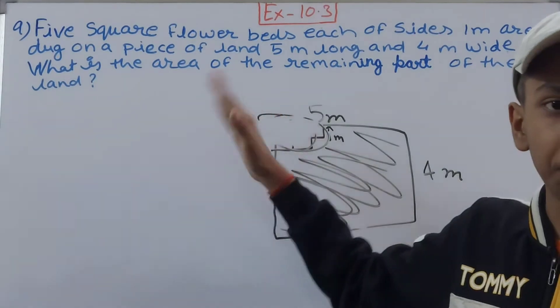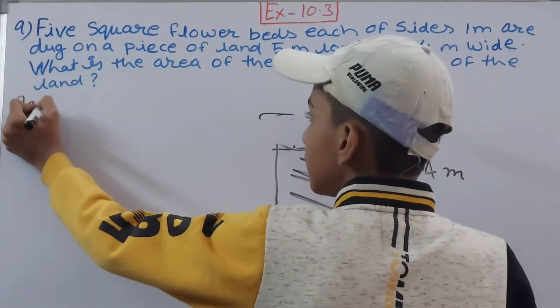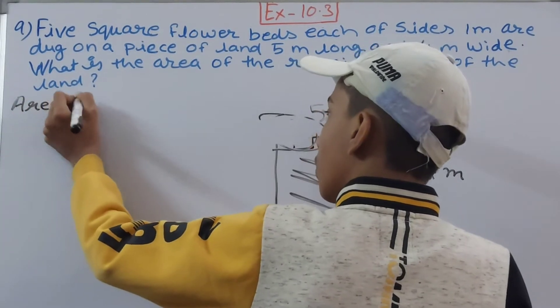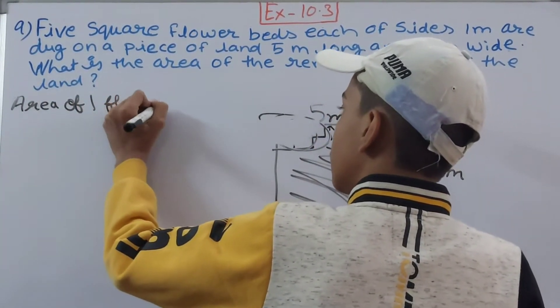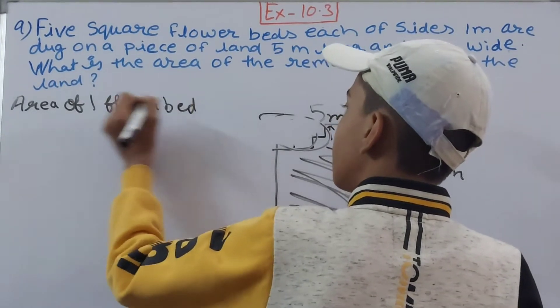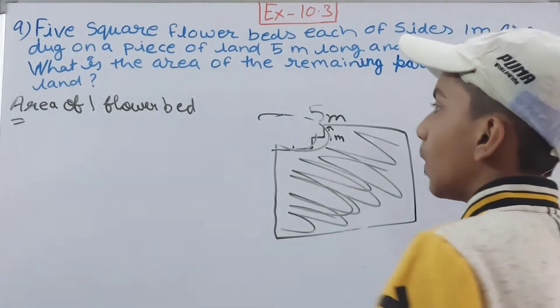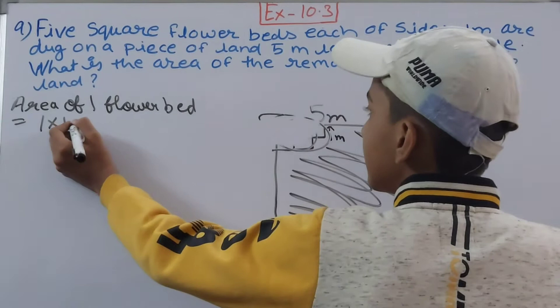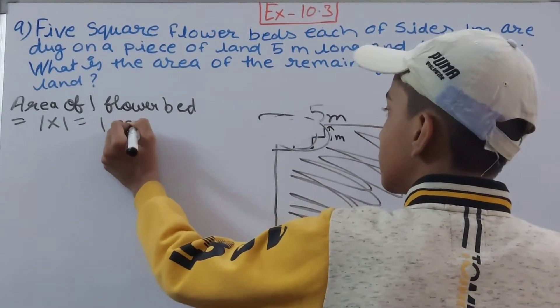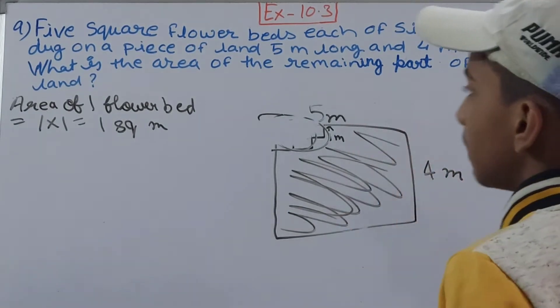Area of one flower bed: First of all, one flower bed is a square, so you will do side into side, that is 1 into 1. 1 into 1, that is 1 square meter. So area of one flower bed is 1 square meter.